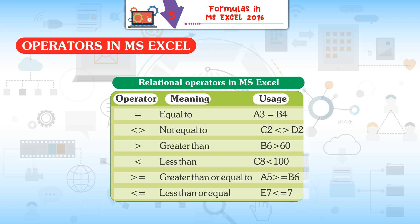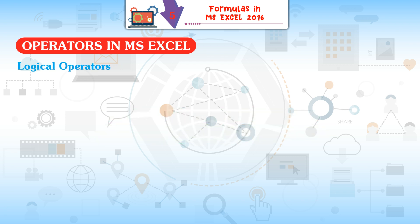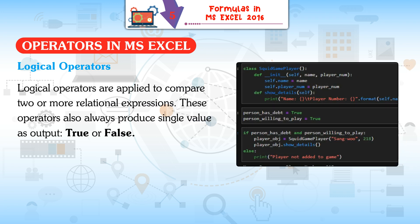Relational operators in MS Excel: Equal to (e.g., A3=B4), Not equal to (e.g., C2<>D2), Greater than (e.g., B6>60), Less than (e.g., C8<100), Greater than or equal to (e.g., A5>=B6), and Less than or equal to (e.g., E7<=7).